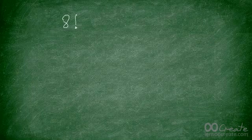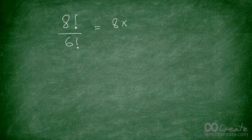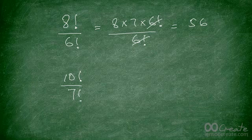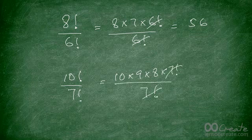What is eight factorial divided by six factorial? It's eight times seven times six factorial, divided by six factorial — the six factorial cancels, leaving eight times seven, which equals 56. And what is ten factorial divided by seven factorial? It's ten times nine times eight times seven factorial, divided by seven factorial — that cancels, leaving ten times nine times eight, which equals 720.